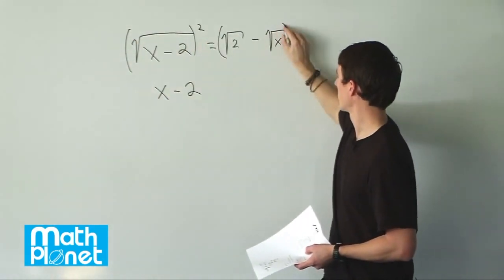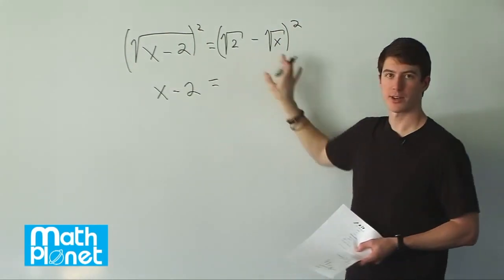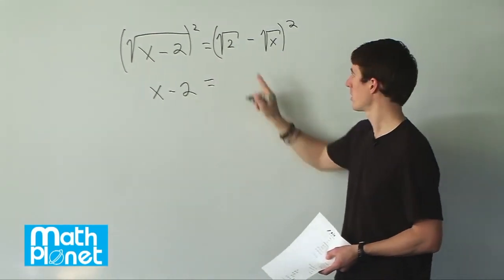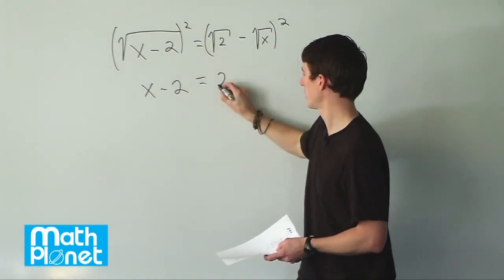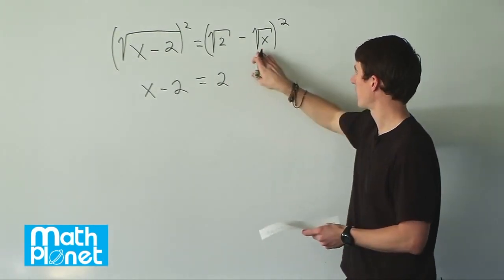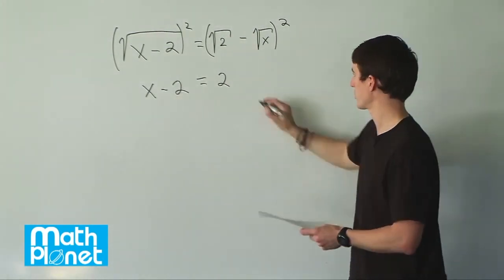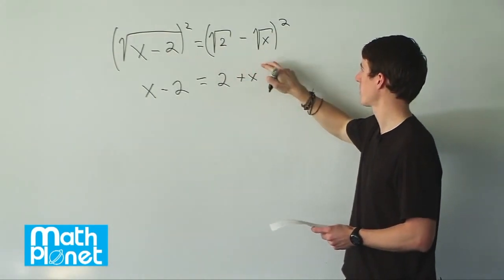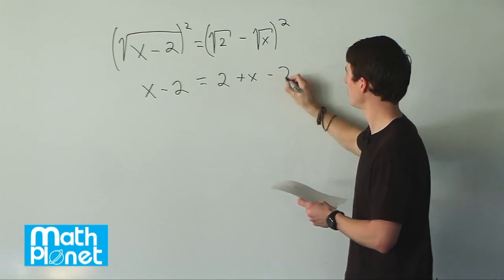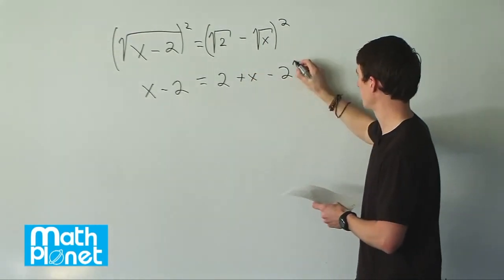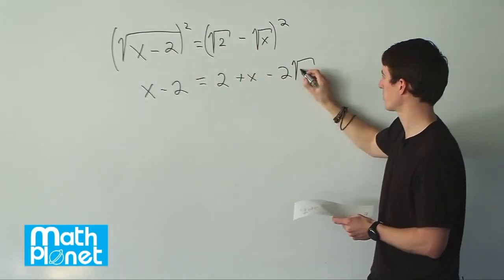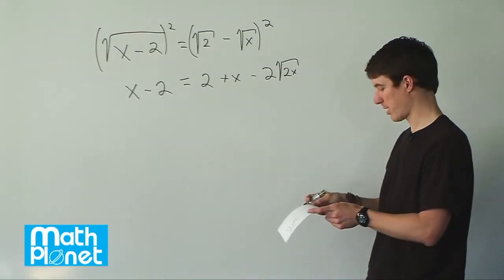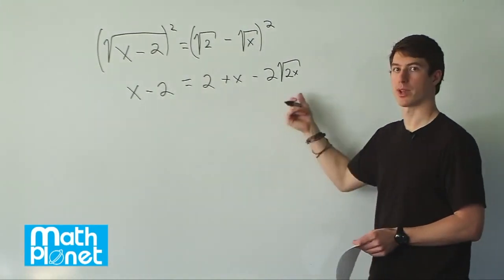If we square the right-hand side, it's going to be a little different — we need to multiply out in the normal order of operations. The first terms: root 2 times root 2 is of course just 2. Then the last term times the last term: negative root x times negative root x, which is just x. And then we have two cross terms — this times this plus this times this. So we'll have negative 2 times root 2 times root x, which we can write together as negative 2 root 2x.